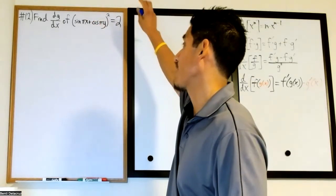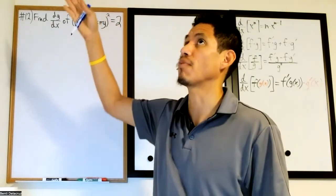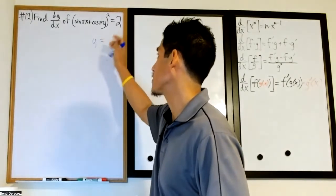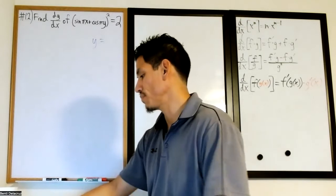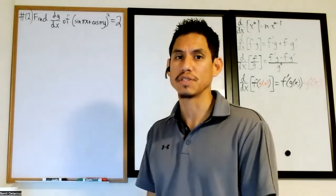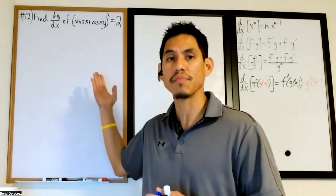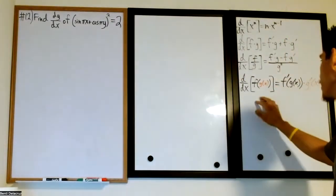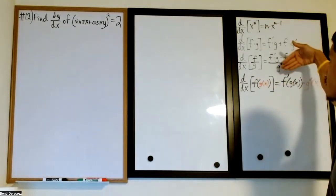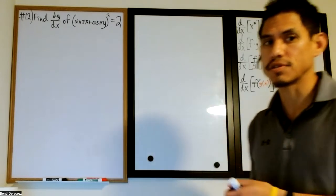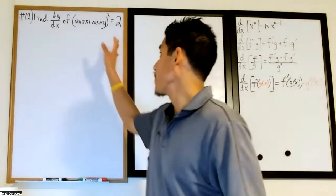We say we don't have y written explicitly in terms of x, meaning you don't have y by itself on one side and all the x terms on the other side. Some equations you just can't do that, and when you can't, we apply what's called implicit differentiation. Implicit differentiation uses the chain rule frequently, so make sure you're competent with it, and of course know all the other differentiation rules: the power rule, product rule, and quotient rule.